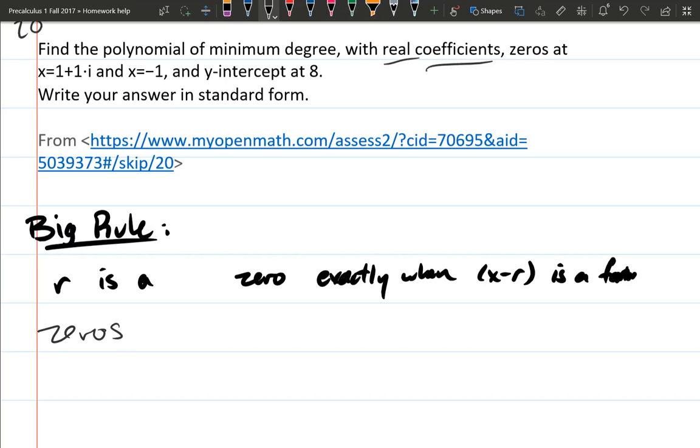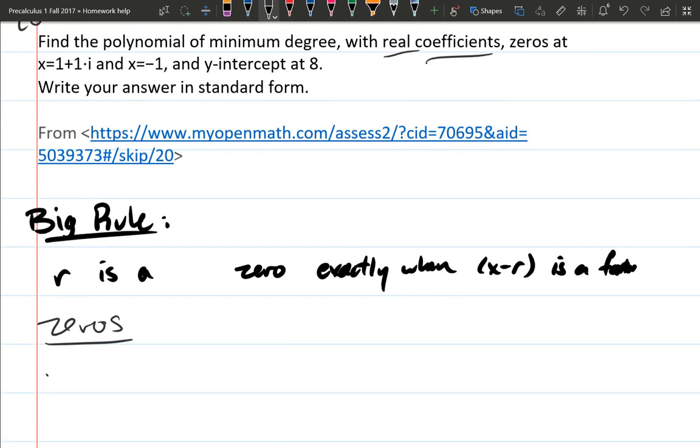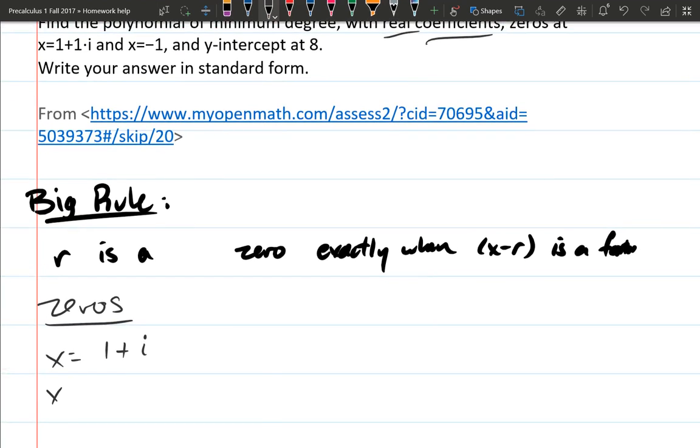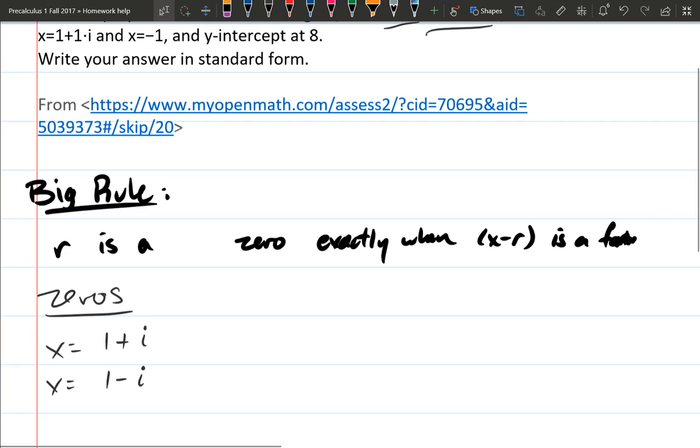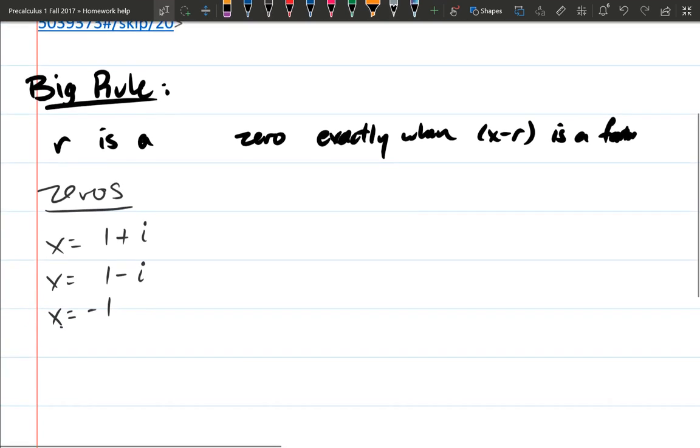So I'm going to write all those zeros on the left, and just reading at the top of the screen, we have x equals 1 plus i. You also get the conjugate, 1 minus i, and there's a third one, x equals negative 1. I'm going to write the last piece of information, y-intercept at 8. This is not a zero, so I want to split this off from the zeros.